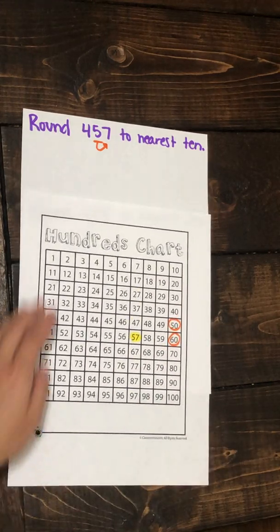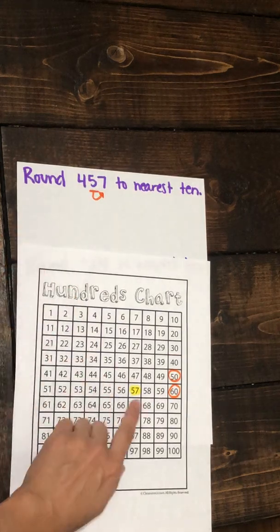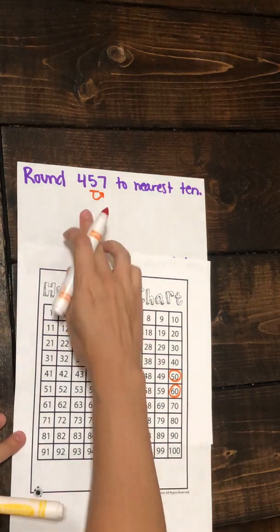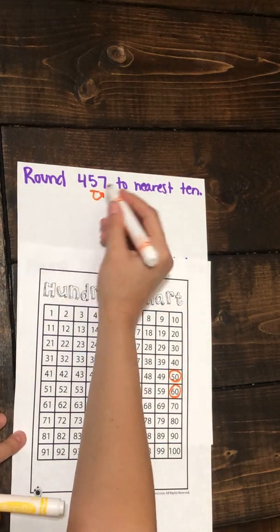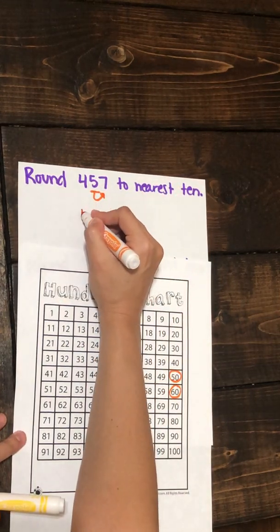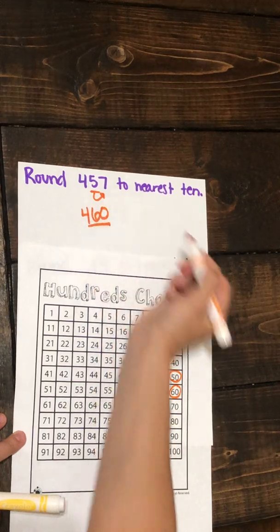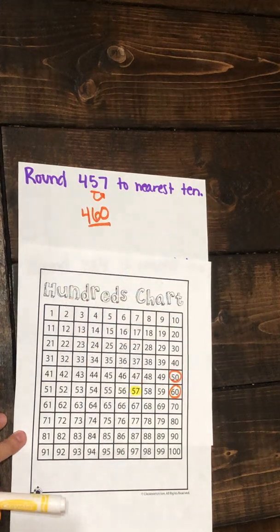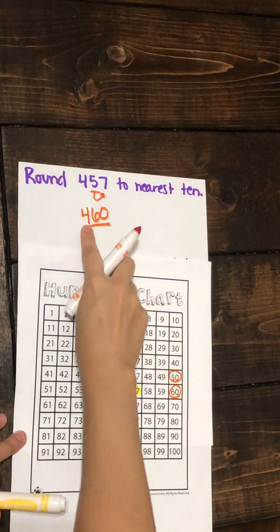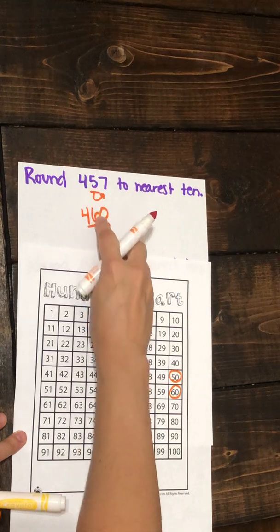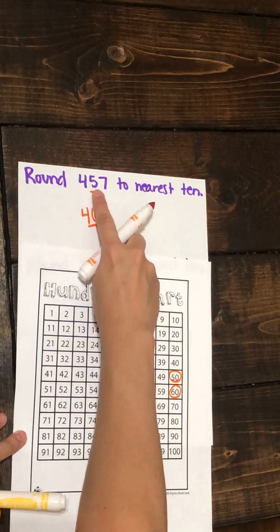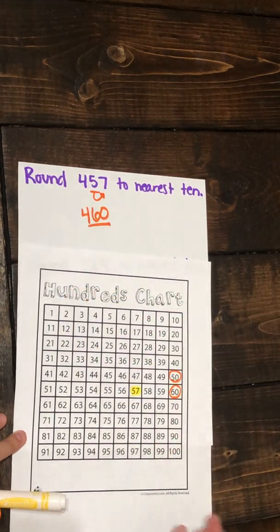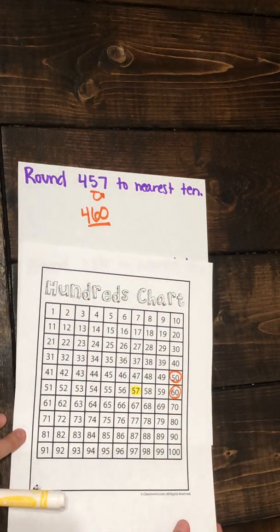It is closer to 60. So the number 457 is rounded up to 460 when rounded to the nearest ten. The four stays the same because it's in the hundreds place and we're not rounding to the hundreds. The five is in the tens place, and because 57 is closer to 60 than 50, we round up to 60. So 460.